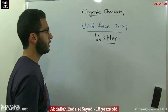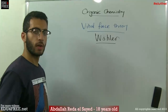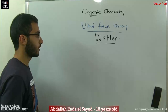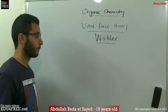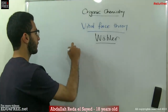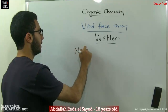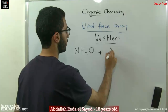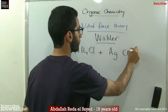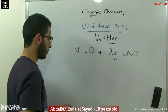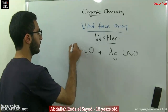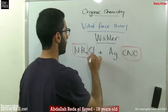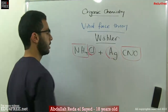What Wöhler did is he prepared urea, which is an organic compound, from ammonium chloride and silver cyanate (AgCNO). He let ammonium chloride react with silver cyanate — that's the ammonium group, that's the cyanate group, the chloride, and the silver.